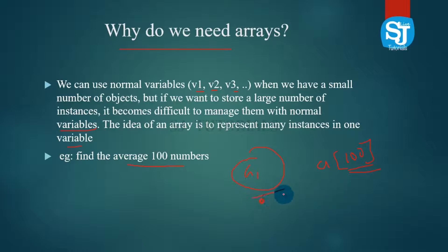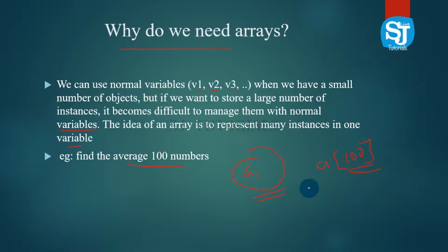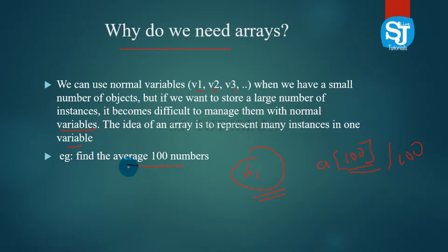Here we have 3 variables — this is the concept of the problem. Variables A, B, C, D, E are used. If the value of this variable is 100, you can also write negative values.